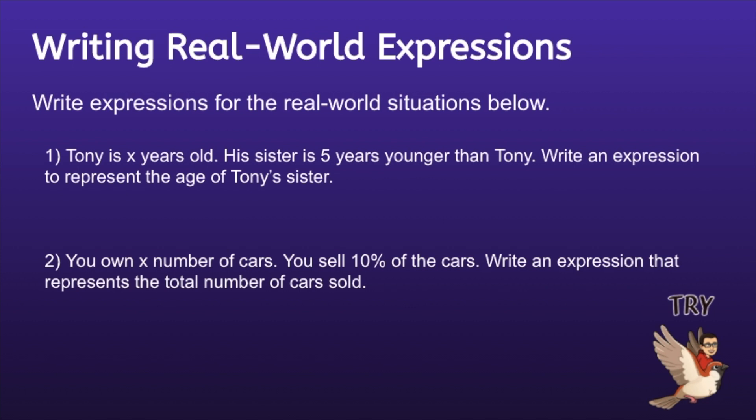Okay, let's check it out. The first one says: Tony is X years old. His sister is 5 years younger than Tony. Write an expression to represent the age of Tony's sister. We could write this as the expression X minus 5. And number 2: you own X number of cars, you sell 10% of the cars. Write an expression that represents the total number of cars sold. You could write this real-world situation with the expression 0.1X.